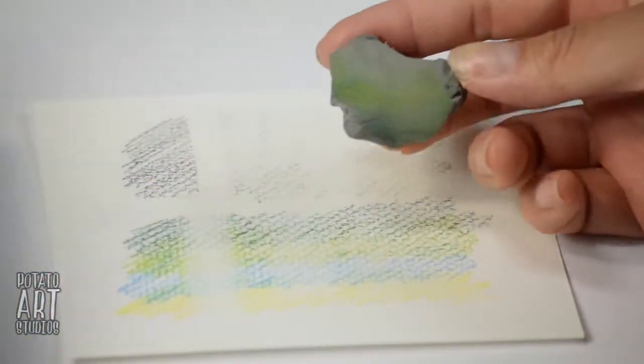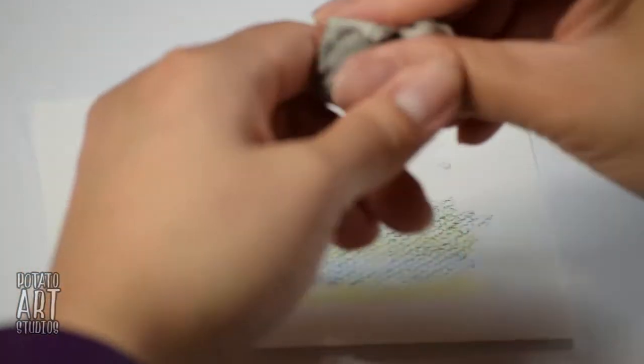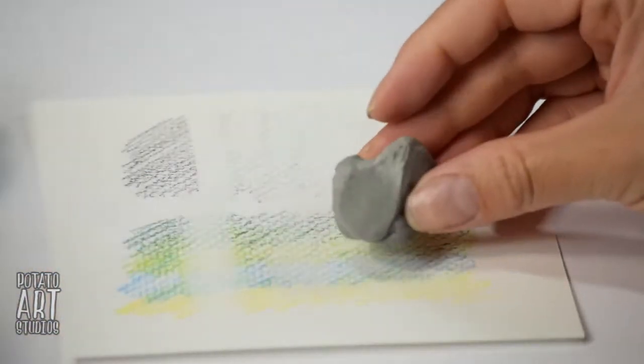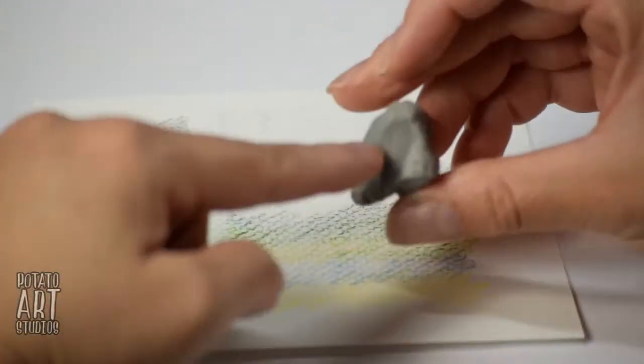And again, to clean it, you just fold it on itself, pull it like taffy a couple times, and you can't even see the green anymore. It's like magic. But there is a lifespan to an eraser.